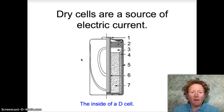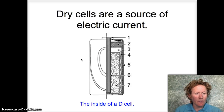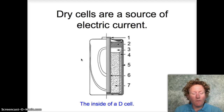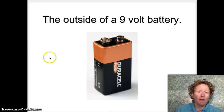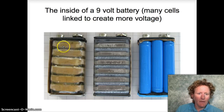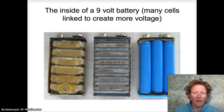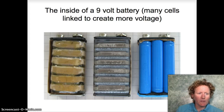Dry cells are a source of electric current. If you want to make an electromagnet or electric motor, they're a great source of current. This is the inside of a D cell, and inside a 9-volt battery there's a bunch of cells all wired together to make more voltage.